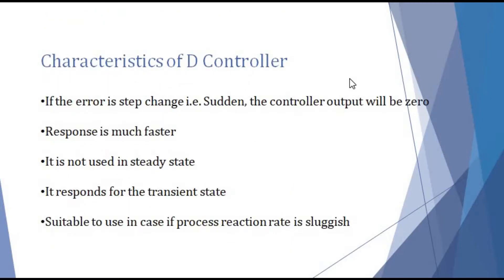Now let us look at the characteristics of a D-controller, which includes its advantages as well as disadvantages. The first point says: if the error is a step change — that is, sudden — the controller output will be zero, because the derivative of a constant is always zero. In case of a D-controller, the response is much faster. This first point is a disadvantage, and the second point is an advantage of a D-controller.